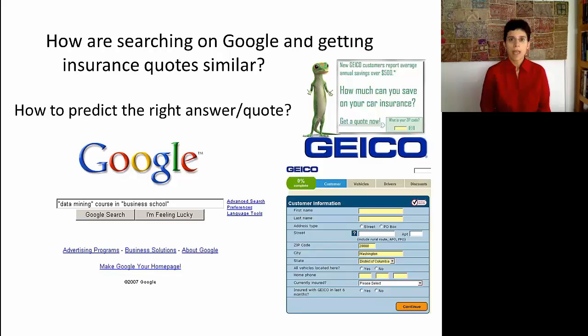For instance, how are searching on Google and getting insurance quotes similar? When you type some keywords in Google.com, how does it know which results to give you back? Or when you fill out an online form for insurance, how does it know what quote to give you back? The idea behind both of these applications is that they're comparing the information that you convey to information conveyed by other users. And the key here is trying to detect similarities between you and other users.